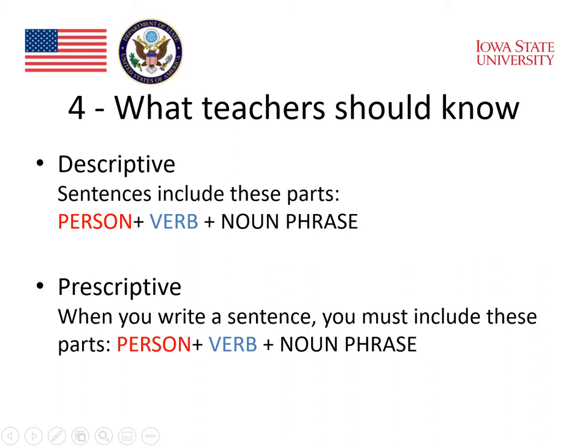In contrast, we often work with prescriptive grammar. Prescriptive rules are like this example: when you write a sentence, you must include these parts — a person, a verb, and a noun phrase. Prescriptive rules usually have the modal auxiliary 'must' or 'should' in them. They tell students what rules there are that they should be following.